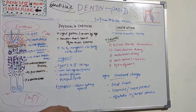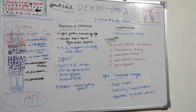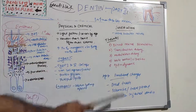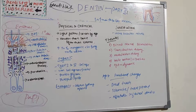The theories of pain transmission are: direct neural stimulation, transduction theory, modulation theory, gate control or vibration theory, and hydrodynamic theory. Let's examine them one by one. The first is direct neural stimulation, according to which nerves in dentine get directly stimulated.